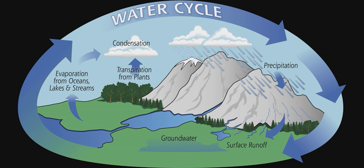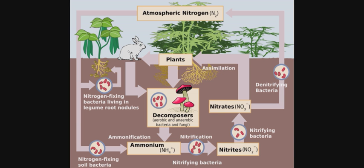Next is the nitrogen cycle. Nitrogen is an important nutrient needed by living organisms, essentially as a component of proteins, DNA, and chlorophyll. The atmosphere is a rich source of nitrogen — 78% of the atmosphere is nitrogen. However, plants and animals cannot use atmospheric nitrogen directly.